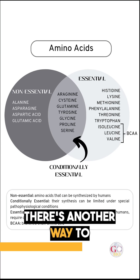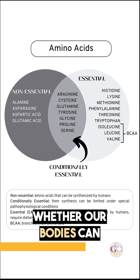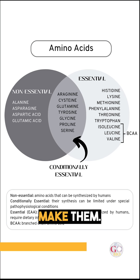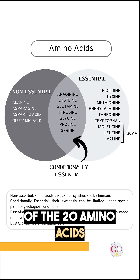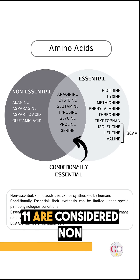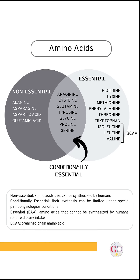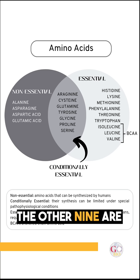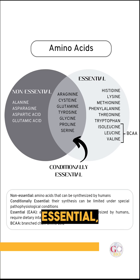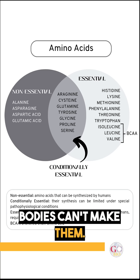There's another way to classify amino acids: by whether our bodies can make them. Of the 20 amino acids the body needs to function, 11 are considered non-essential because we can produce them ourselves. The other nine are essential, meaning we must get them from food since our bodies can't make them.